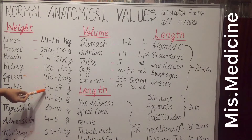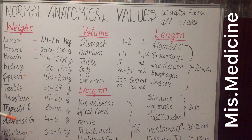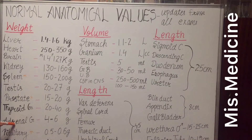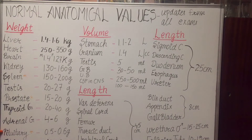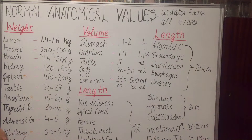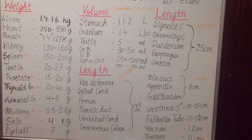Testis is 20 to 27 gram, prostate is 15 to 20 gram, thyroid gland is 20 to 40 gram, adrenal gland is 4 to 6 gram, pituitary gland is 0.5 to 0.6 gram, skin is 4 kg, and eyeball is 7 gram. Now we will start from volume.